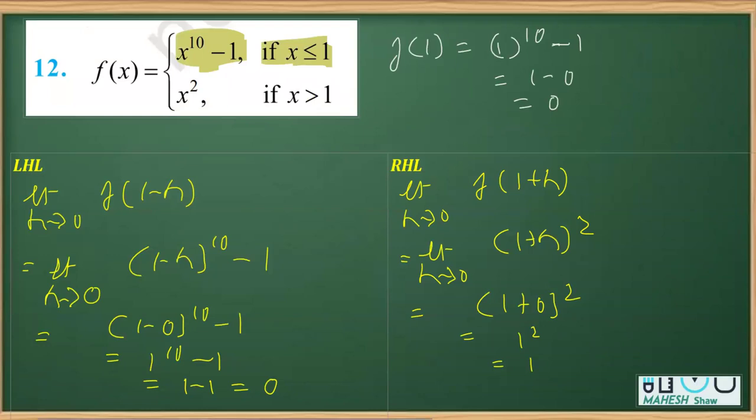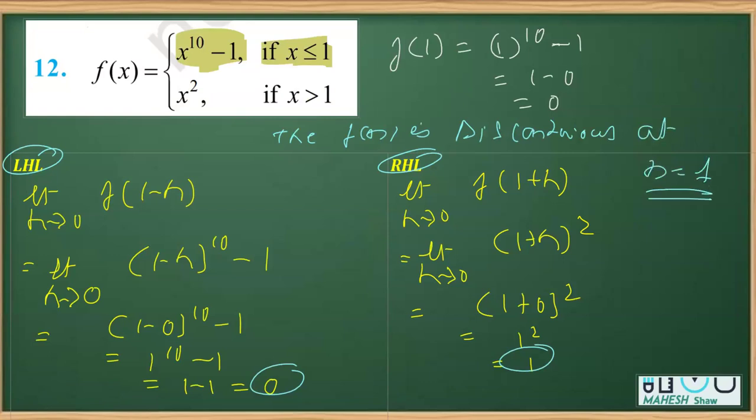We can clearly see that LHL is not equal to RHL. This LHL whose value is 0 is not equal to RHL, that is 1. Since the LHL is not equal to RHL, we can conclude that the function f(x) is discontinuous at x equals 1.